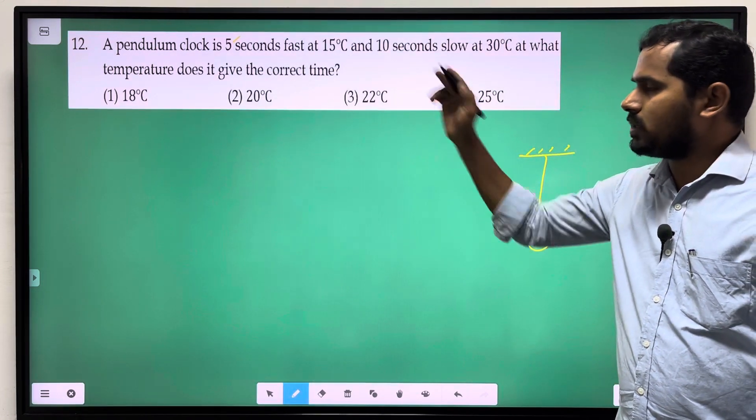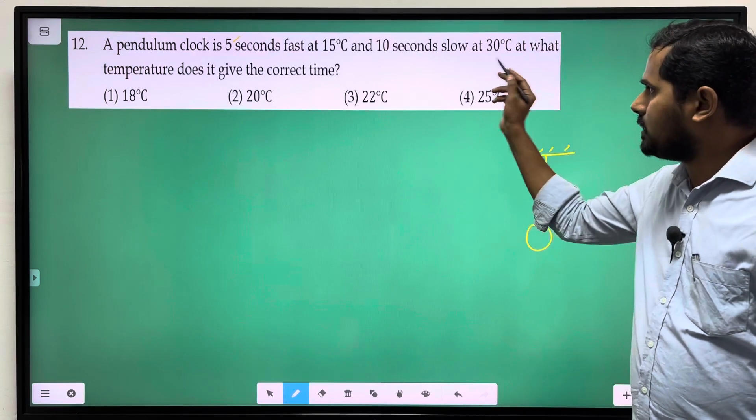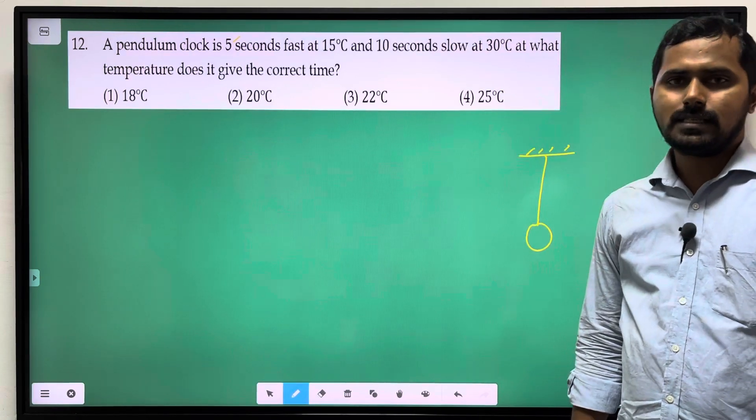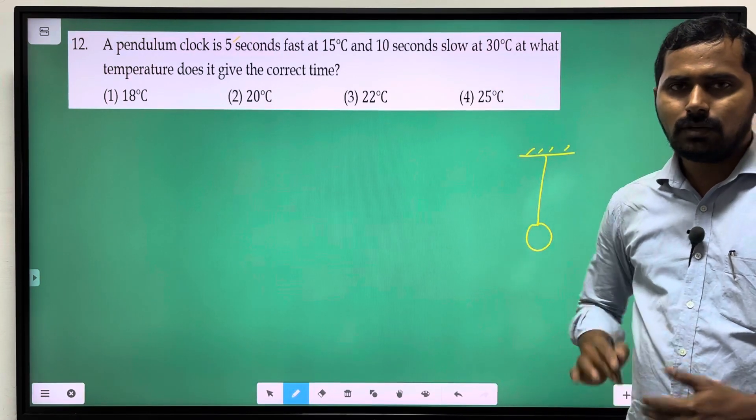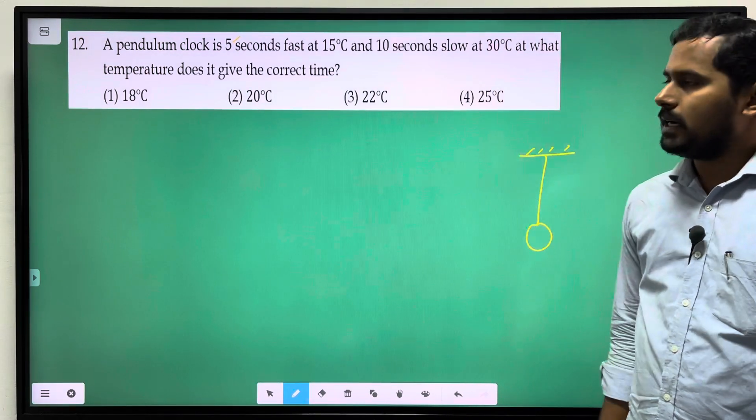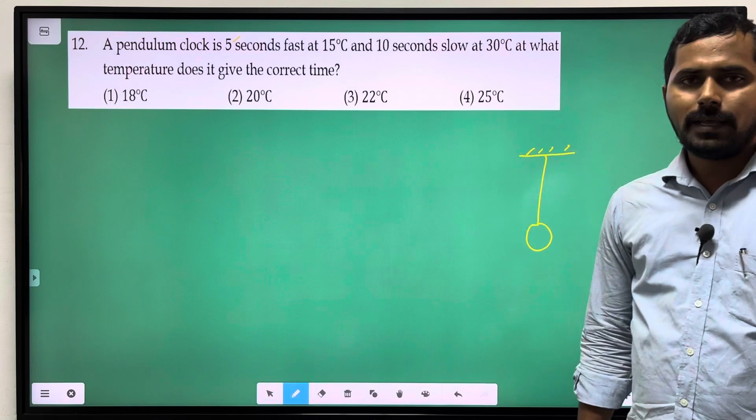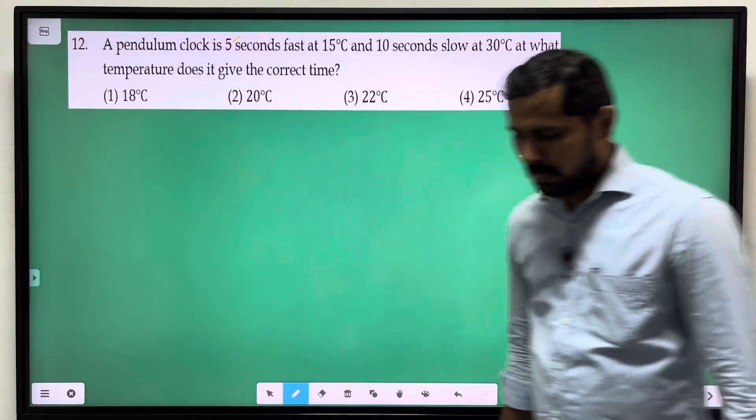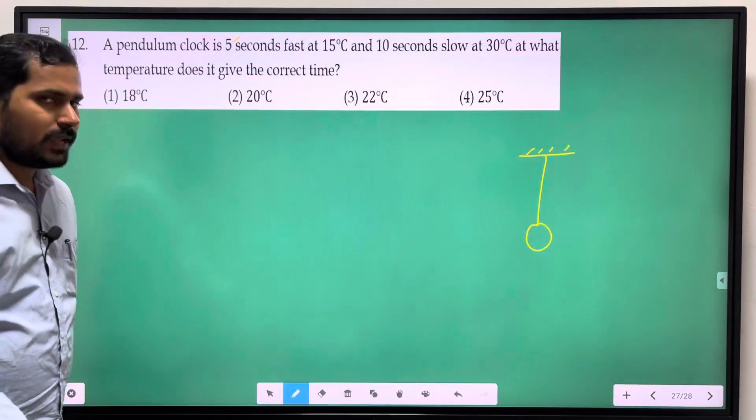5 seconds fast at 15 degrees Celsius, 10 seconds slow at 30 degrees Celsius. In the two situations, we resolve the particular temperature. We have a formula.